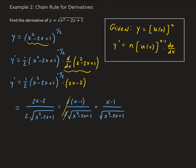Now, x squared minus 2x plus 1 turns out to be factorable — in fact, it's a perfect square. This factors as (x minus 1) squared.